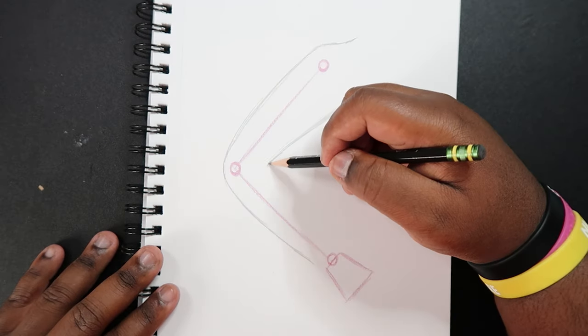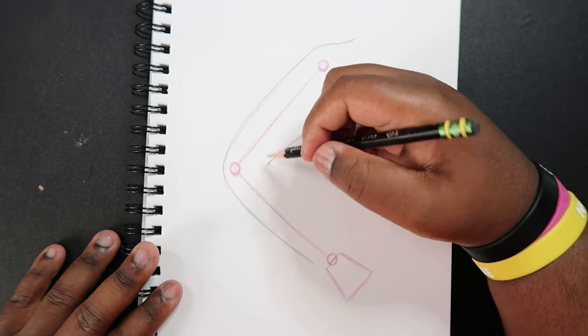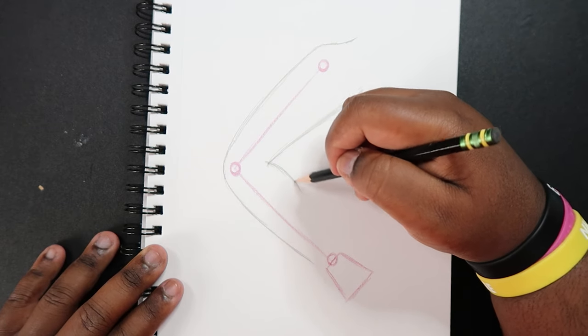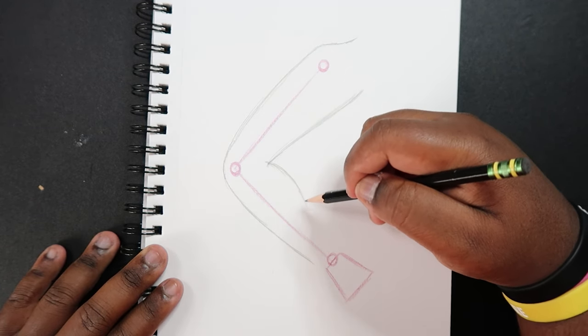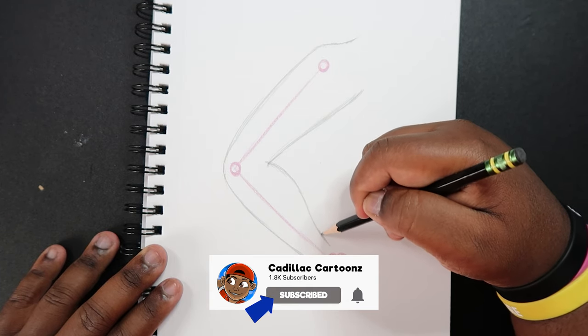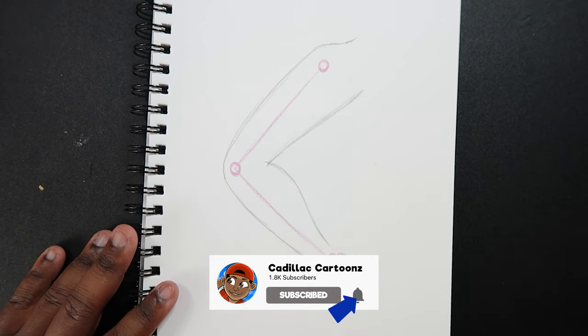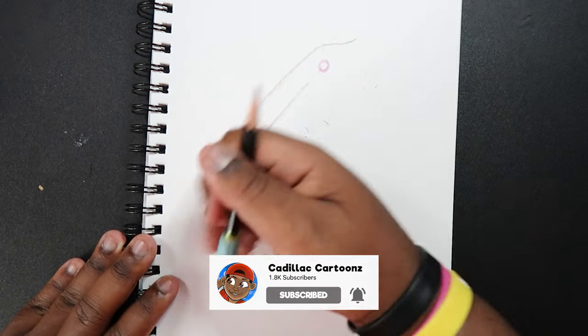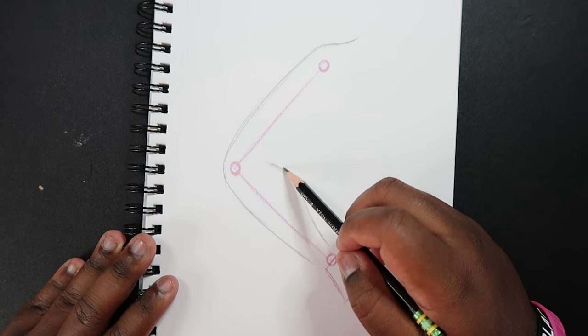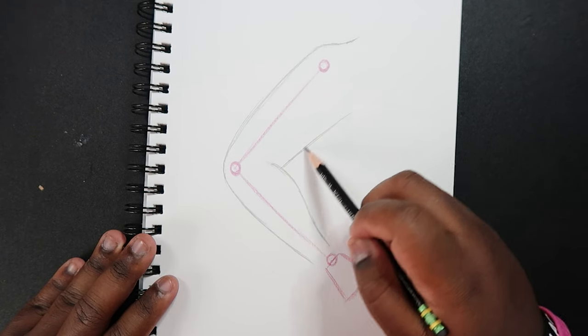Like that. And then coming off of this point where we started, the forearm will make a curve out and it's going to come back in to make the wrist. Sometimes this part of the arm may seem a little bit off after you draw the forearm. That's okay, you can just go back and fix it—just add some more fat.